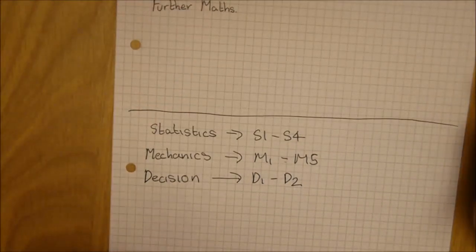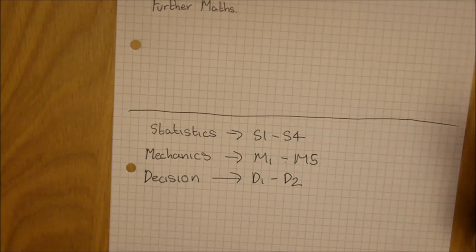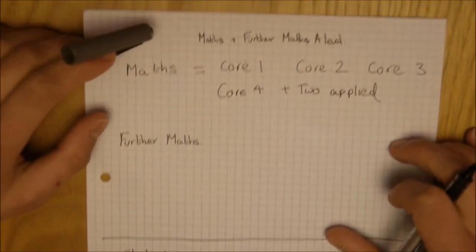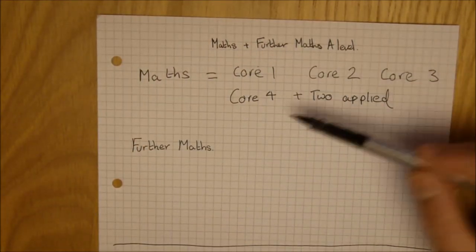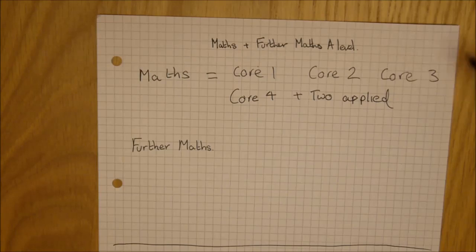So as you can see, there are 11 applied units of maths. Now, for the maths A-level, as we have discussed, you need to do all four core units, core 1, core 2, core 3, core 4, and two applied units.